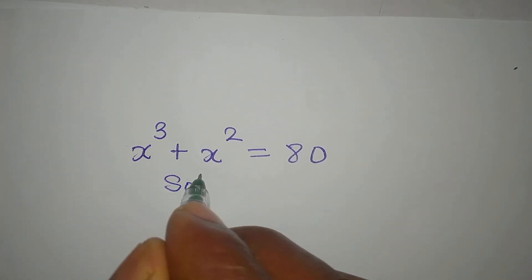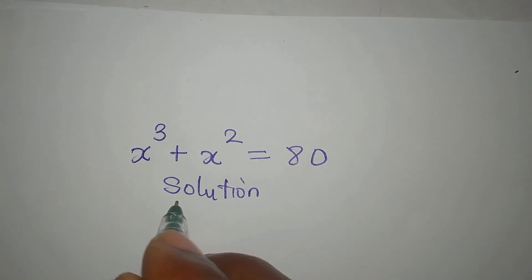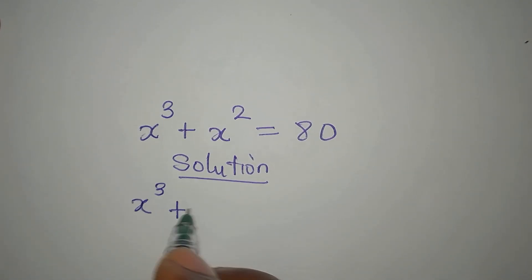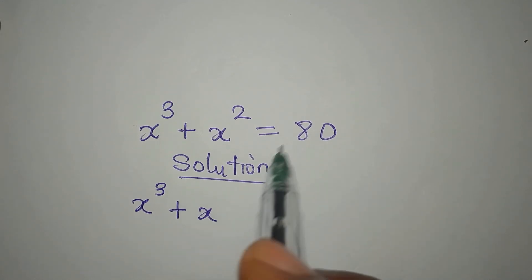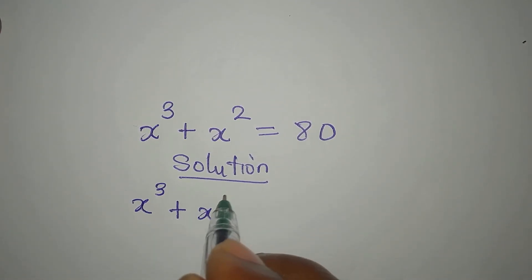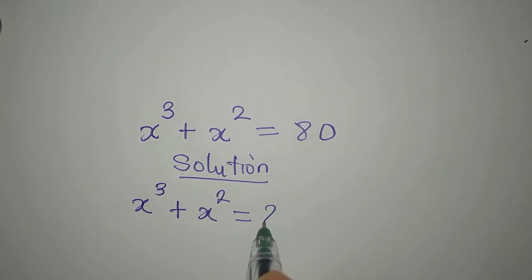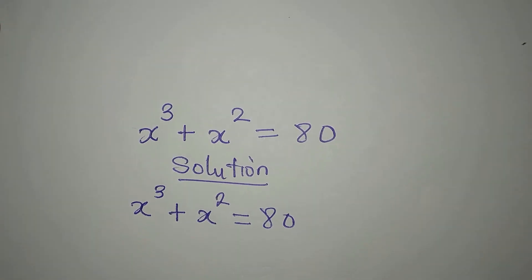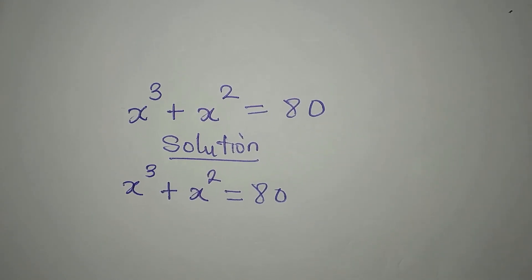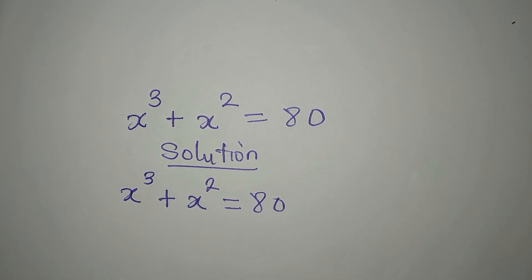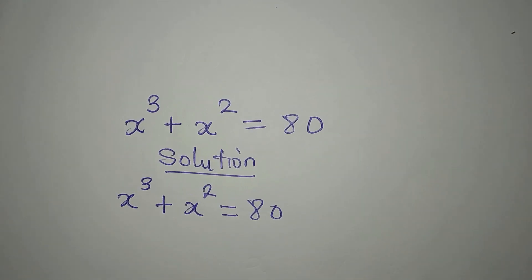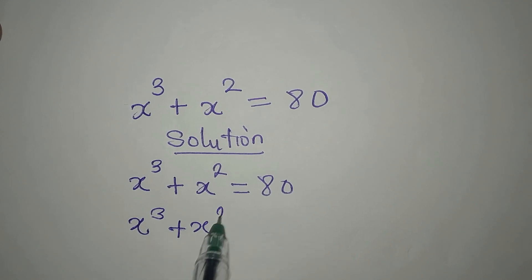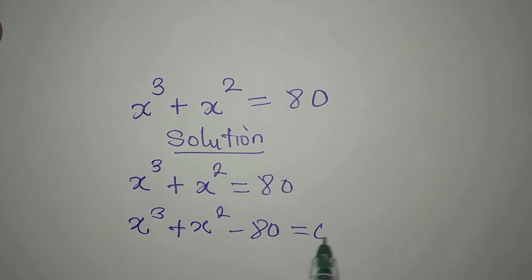Hello everyone, welcome to Foucault Mathematics, where we provide solutions to math problems. We have x to the power of 3 plus x to the power of 2 equals 80. The first step is to bring everything to one side, so we have x³ + x² - 80 = 0.